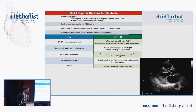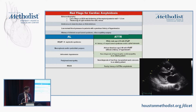For AL amyloidosis specifically, look for patients with nephrotic syndrome and HFpEF, macroglossia, periorbital edema or raccoon eyes, orthostatic hypotension, and peripheral neuropathy — especially in non-diabetics. For TTR, watch for HFpEF plus carpal tunnel syndrome, African-Americans with HFpEF without hypertension, new diagnosis of hypertrophic cardiomyopathy in an elderly patient, low-flow low-gradient aortic stenosis, and of course family history.